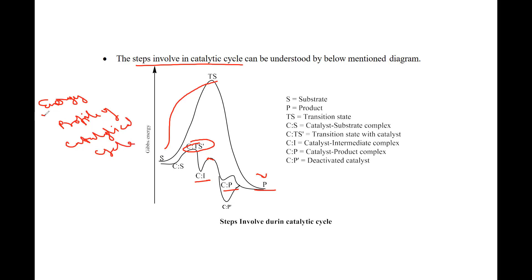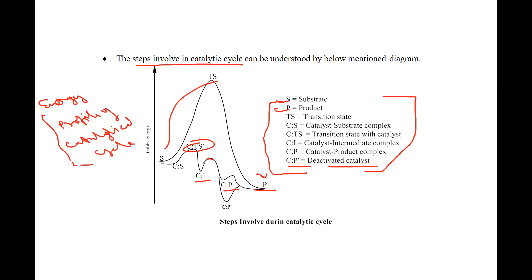This is the energy profile diagram of the catalytic cycle. C-P is the deactivated catalyst-product complex. C-I is the catalyst-intermediate complex. C-T is the transition state catalyst. C-S is the catalyst-substrate complex. T-S is the transition state, and P is the product substrate. These are all the steps involved in the catalytic process.